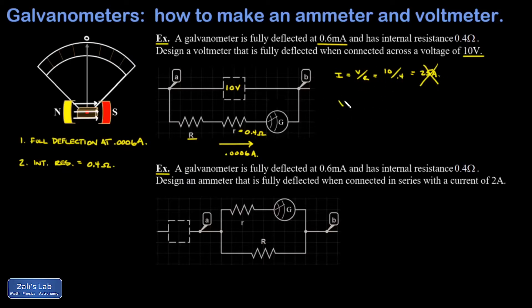I'm going to apply Ohm's law to the galvanometer branch: V equals IR. I know it has a 10 volt potential difference across it, and I know I is 0.0006 amps when at maximum deflection, and my total resistance is big R, the resistor in series, plus little r, the internal resistance of the galvanometer.